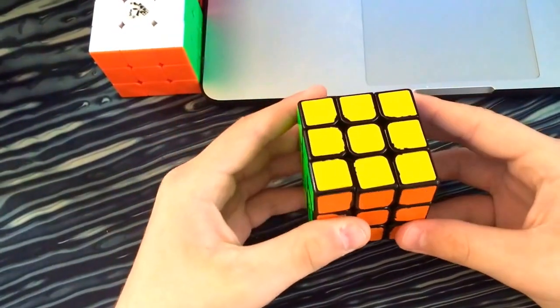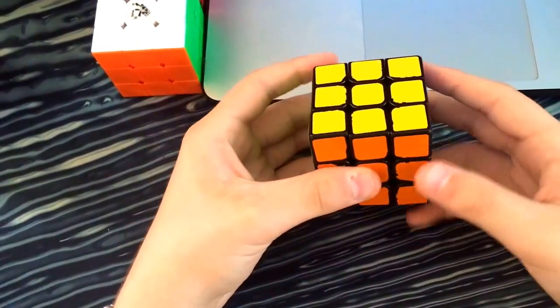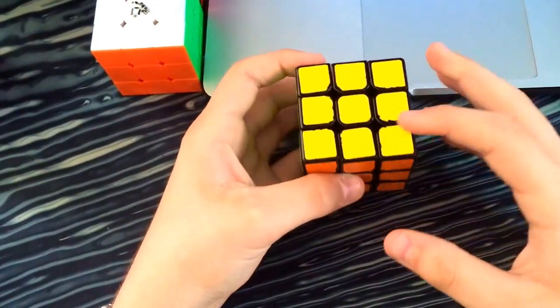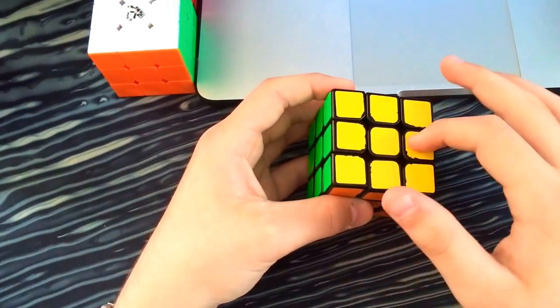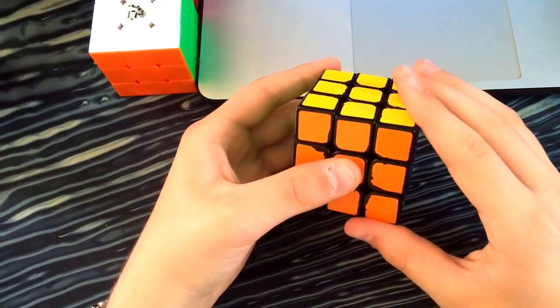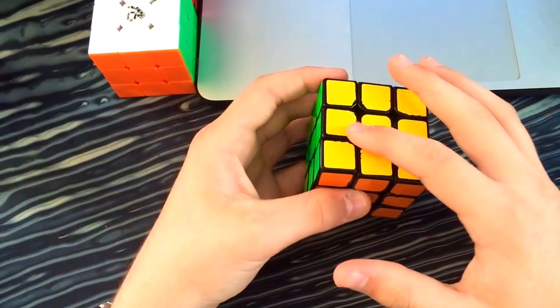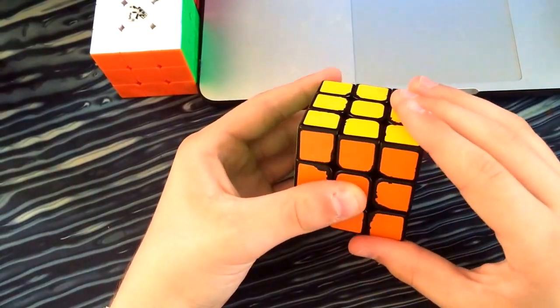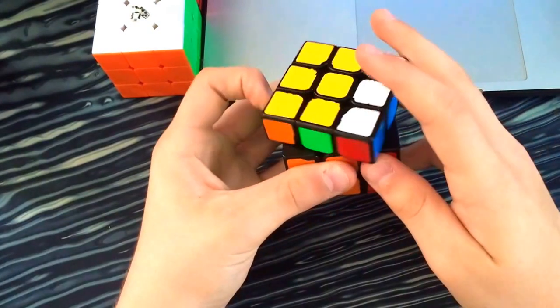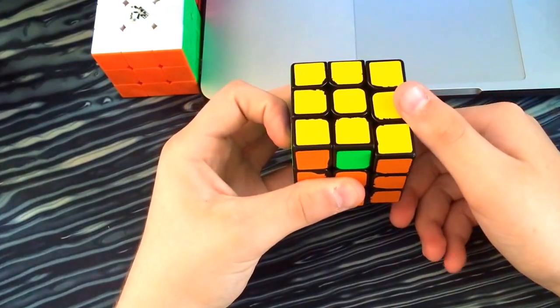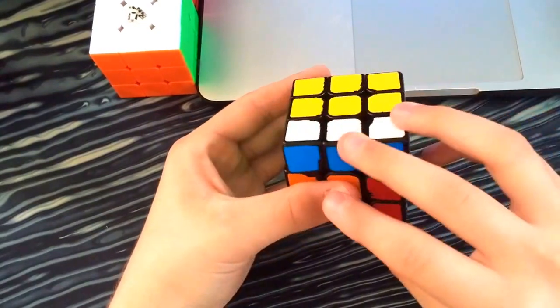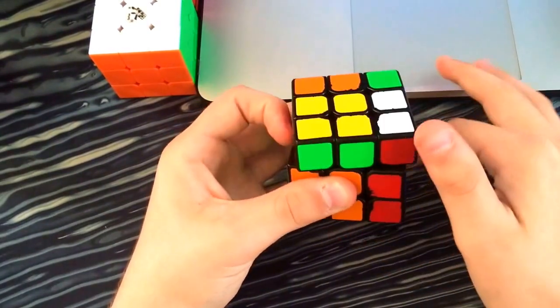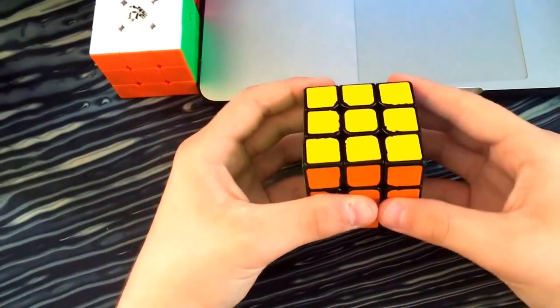So for the Uperms, or the EPLLs, let's start with Uperms. For the counterclockwise one I guess. Yeah. I go. And then, for the other one, I just do the inverse. Alright.